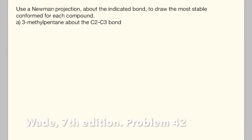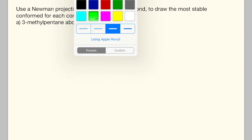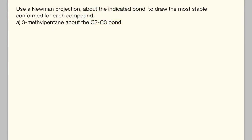Problem 42 from Wade's chapter 3, seventh edition. We're asked to draw a Newman projection for 3-methylpentane about the C2-C3 bond. First, we can draw out a line drawing of this structure. So there's pentane with five carbons.